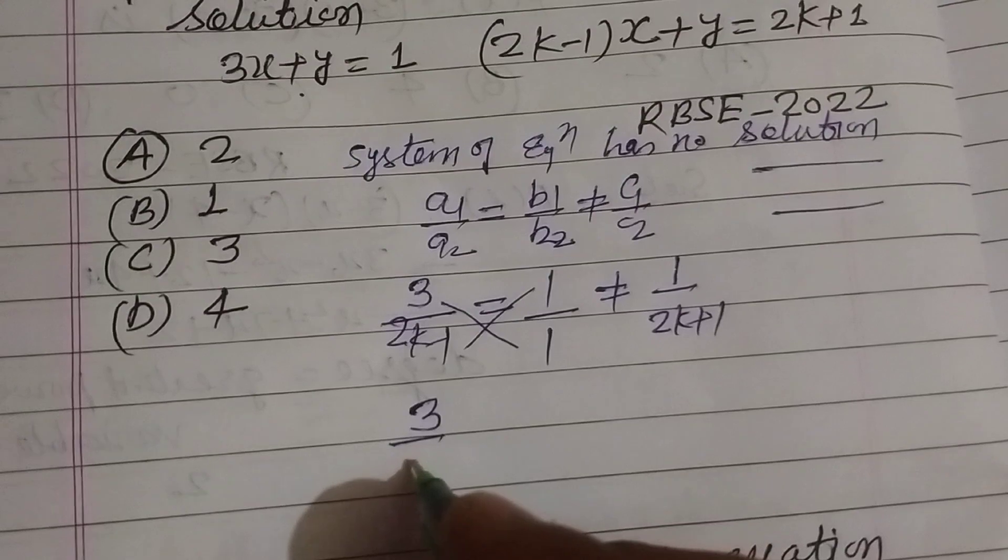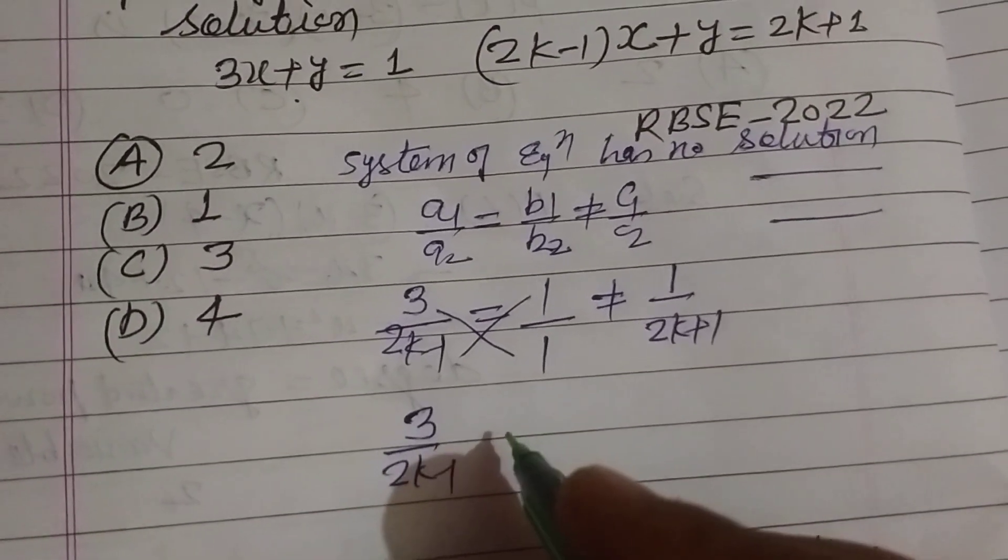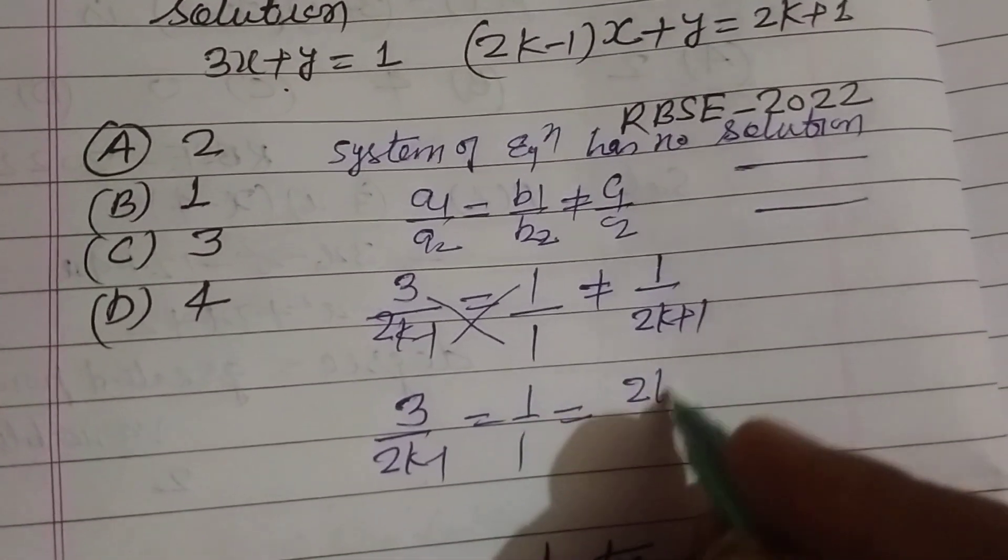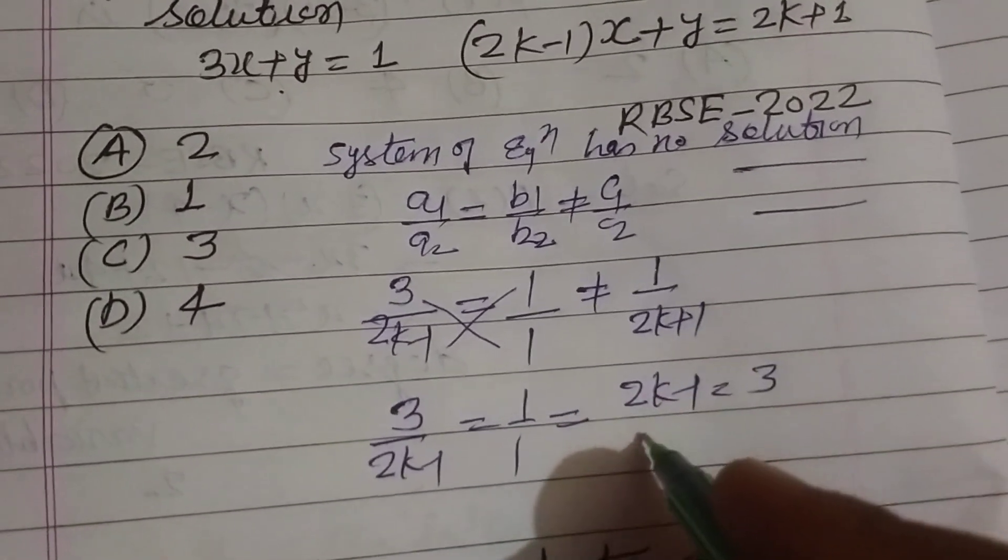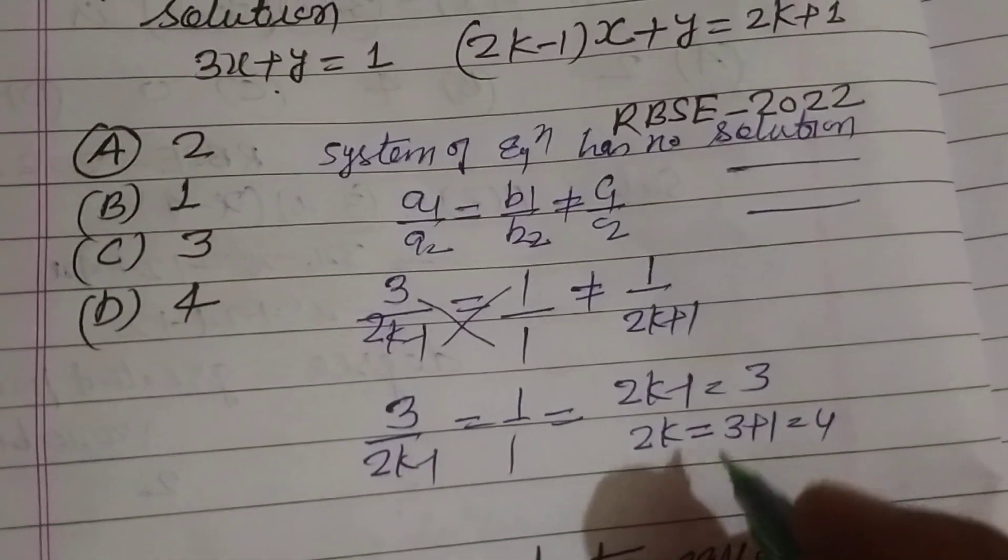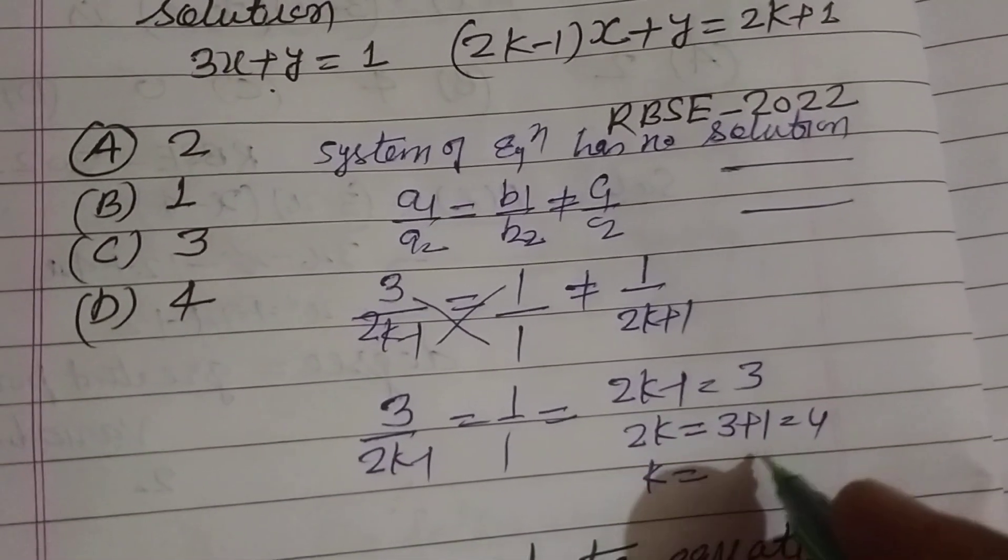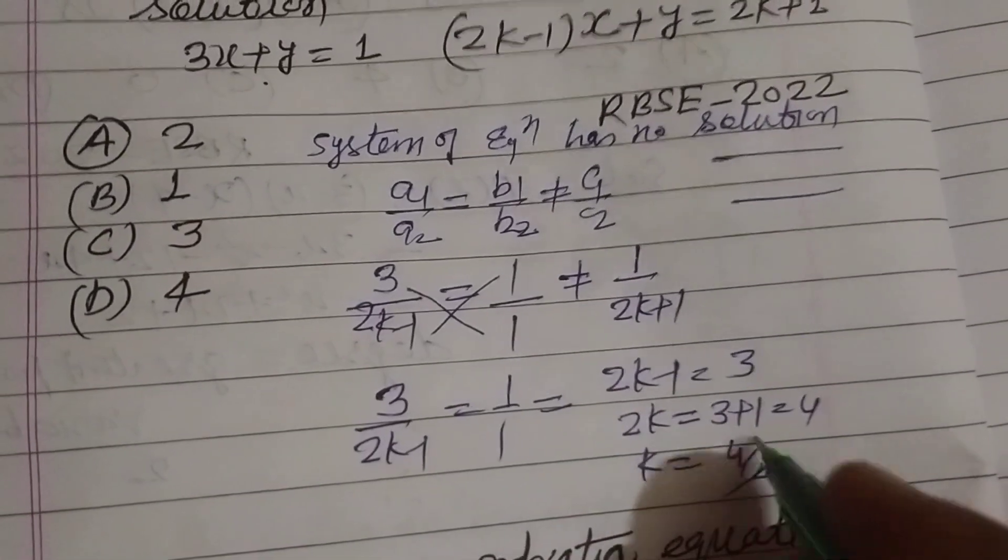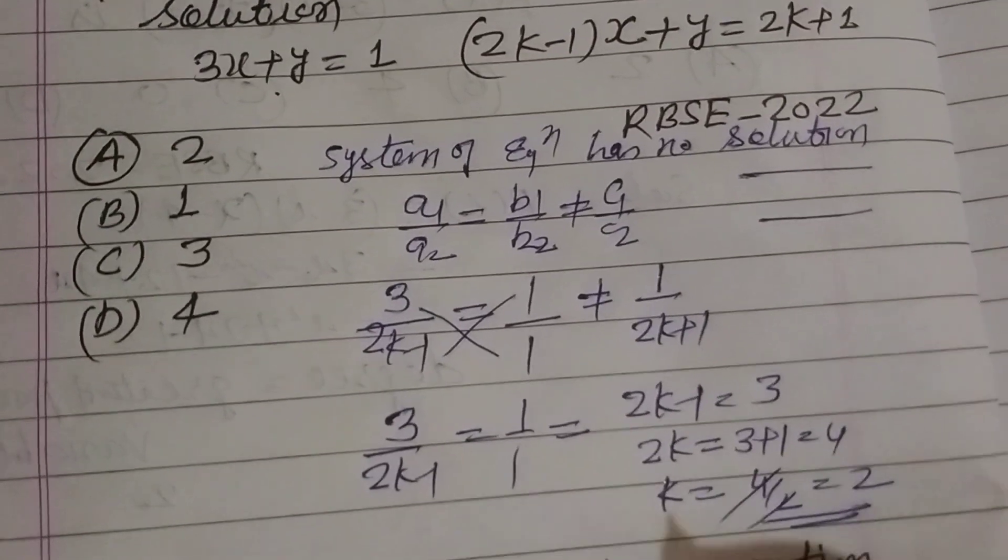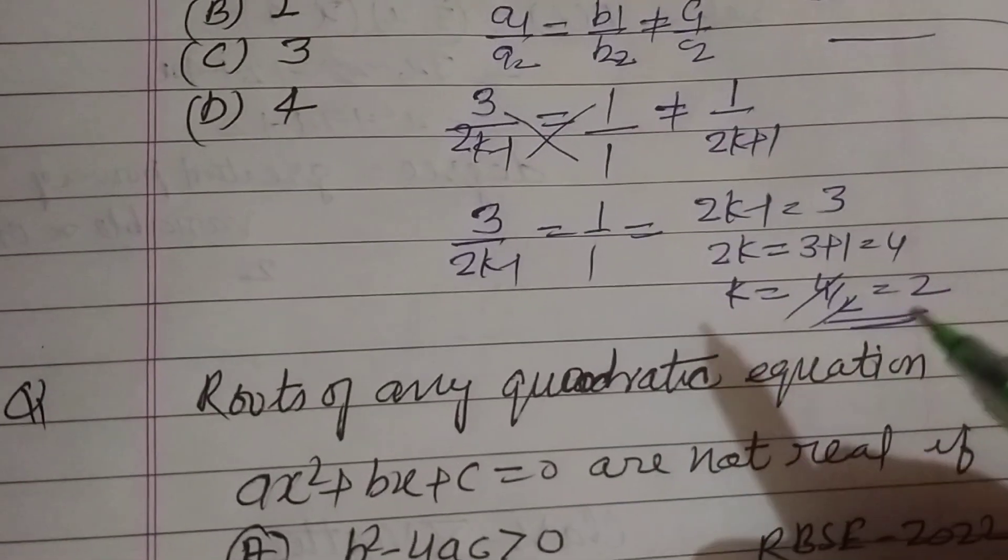3/(2k-1) = 1/1, therefore 2k-1 = 3. Solving for k: 2k = 3+1 = 4, so k = 4/2 = 2. The answer to this question is 2.